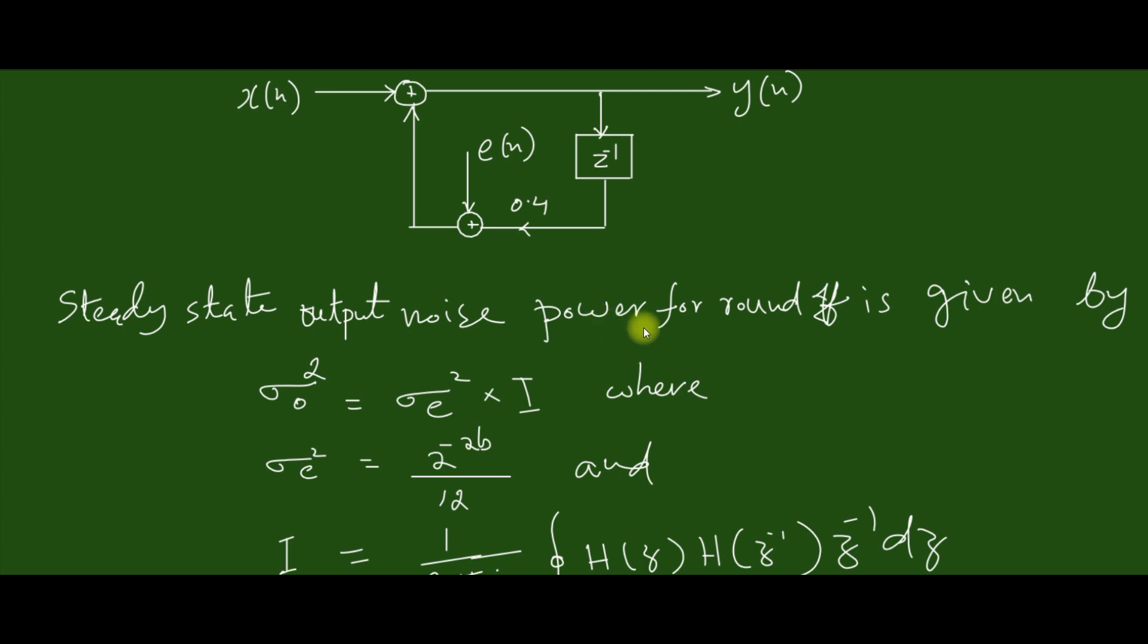Next, let us compute the steady state output noise power for round off, which is given by σ_o² = σ_e² × I, where σ_e² is known as the input quantization noise power which is given by 2^(-2b)/12.